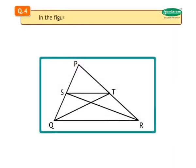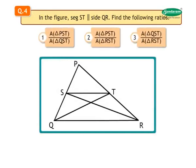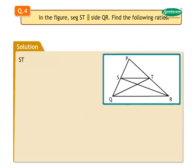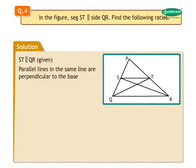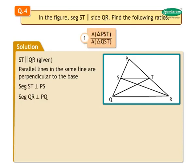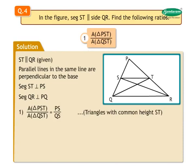Question 4. In the figure, segment ST is parallel to side QR. Find the following ratios. Solution: It is given that segment ST is parallel to side QR. Number 1: Find the ratio of area of triangle PST upon area of triangle QST. Area of triangle PST upon area of triangle QST equals PS upon QS, as they are triangles with common height ST.